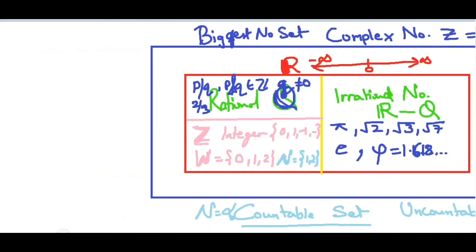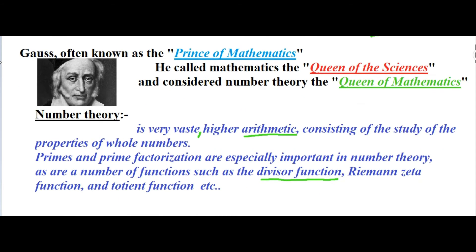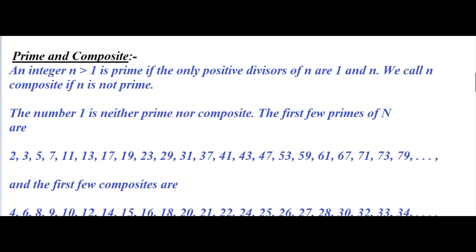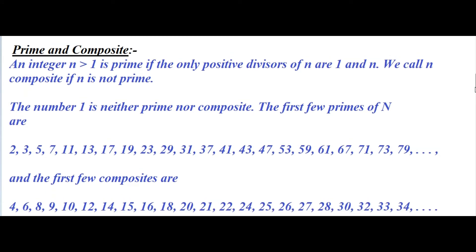Let's move back and talk about prime and composite numbers. A prime is an integer n greater than 1 — the value of n should always be greater than 1, not equal to 1 — and it must be positive. If the positive divisors of n are only 1 and n itself, then it is a prime number. Otherwise it is a composite number.